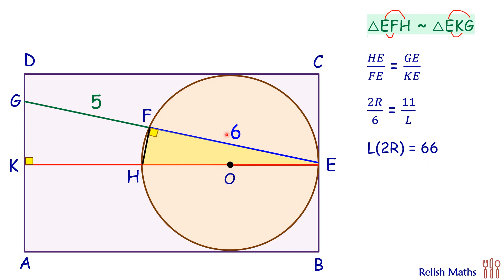Now comes the magic. This 2 times the radius is nothing but the breadth of the rectangle. So the left-hand side is length times breadth, and thus the area of the rectangle is 66 centimeter square. I hope you enjoyed the solution.